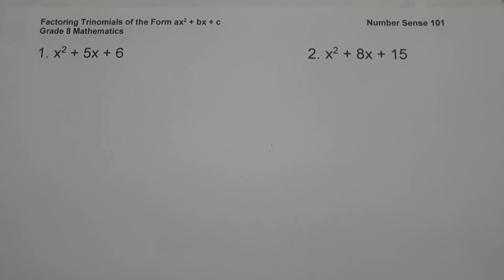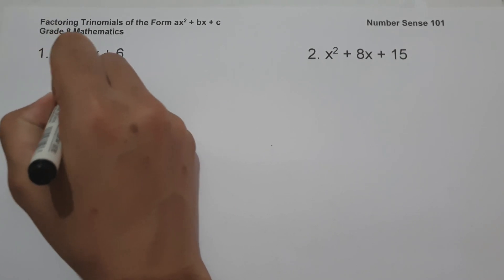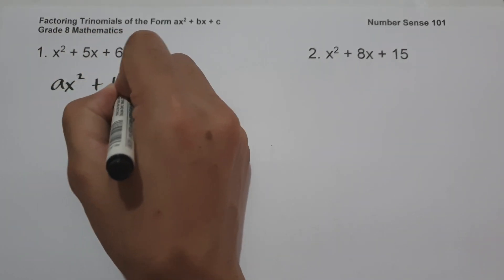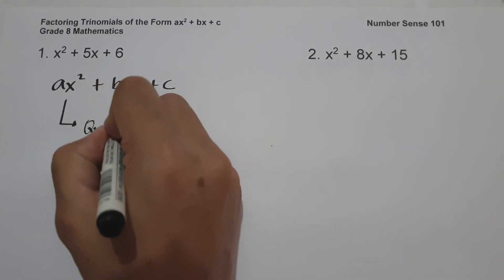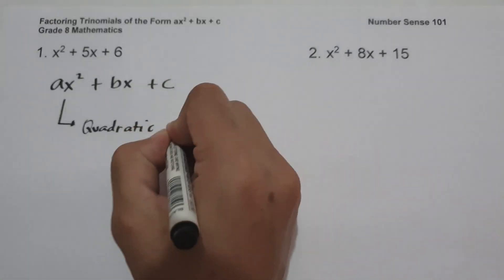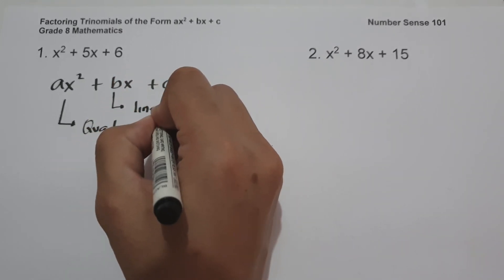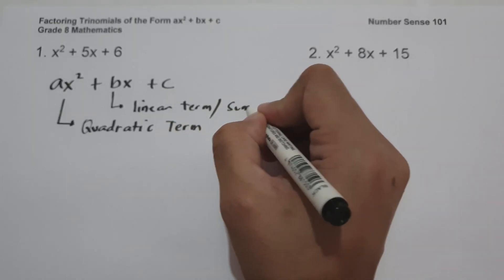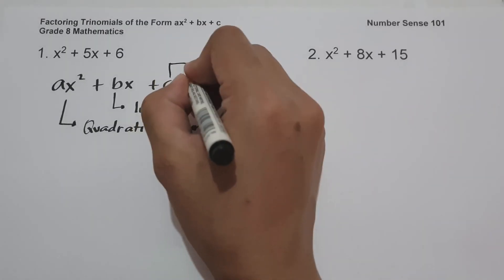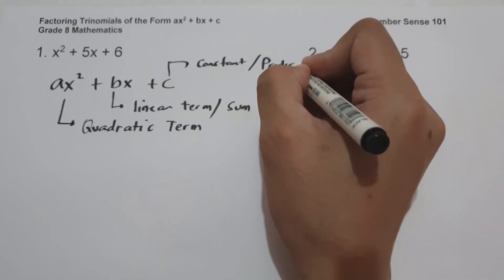On number 1, we have x squared plus 5x plus 6. As you can see, the given expression is written in the form of ax squared plus bx plus c, wherein this is what we call the quadratic term, this will be the linear term or what we call the sum of the roots, and this will be the constant or what we call the product of the roots.